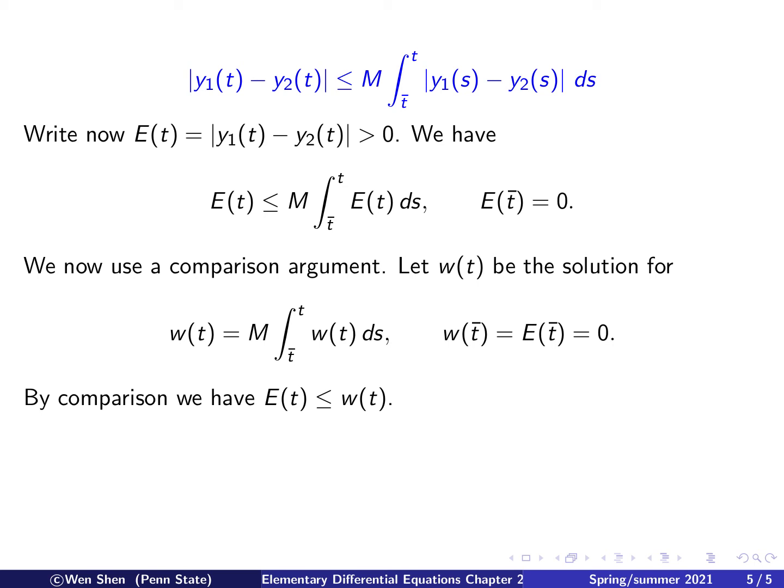So we see that by our construction, we know that w and E are the same initially. And then w equals the integral of w with an equal sign, and E of t is with a less than or equal sign. So by comparison, we conclude that E of t cannot be bigger than w of t.